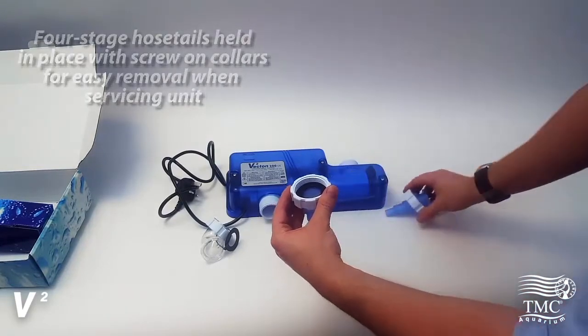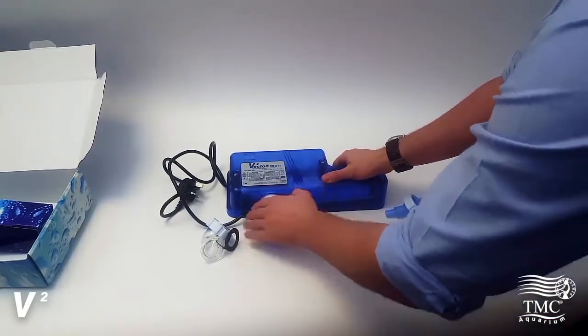You simply slip in the gasket in the end and then just screw it onto the UV, hand tighten only.